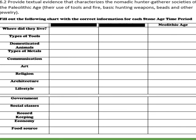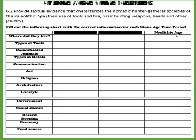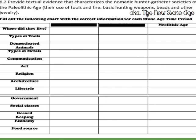We're going to finish up the Stone Age time periods worksheet. Get your worksheet out of your notebook or open it in your Word document. We are going to work on the Neolithic time period today and hopefully finish that column. The Neolithic is also known as the New Stone Age — 'neo' means new. So we had the old stone age, the middle stone age, and the new stone age.